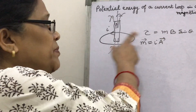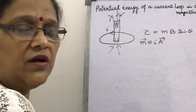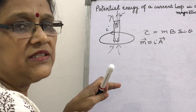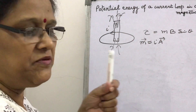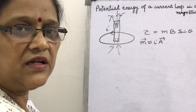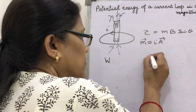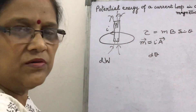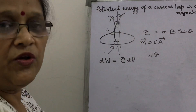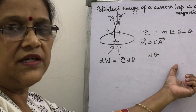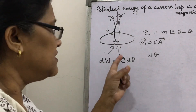When you place the loop in a magnetic field, a torque acts to align the loop such that its axis becomes parallel to the magnetic field. Now if you slightly rotate the loop by a small angular displacement dθ, work must be done. Suppose the total work is W. For a small rotation dθ, the small work element is dW = τ dθ. Just as in linear motion work equals force times displacement, in rotational motion work equals torque times angular displacement.